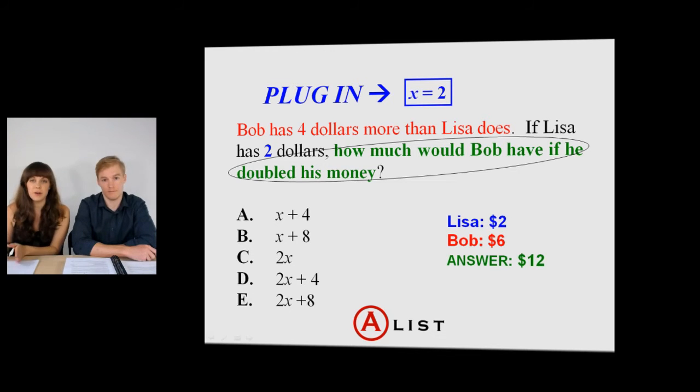Get them to write all of this down. X equals two, Bob equals six, solution or answer equals twelve. Put it in a little box, put it somewhere that they can see it, they're not going to lose it. Great, the answer is twelve. Oh no, none of these say twelve, Kyle.